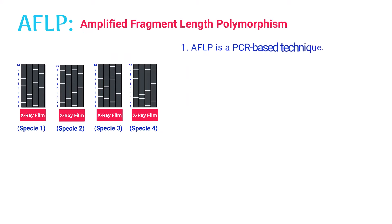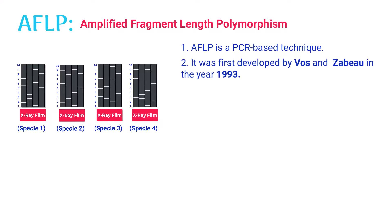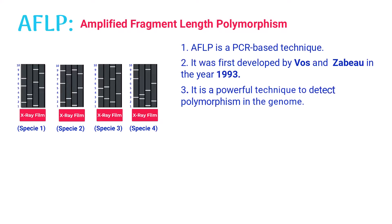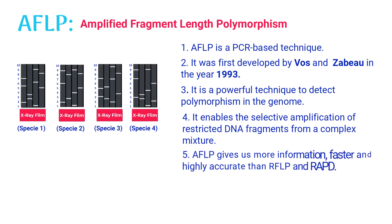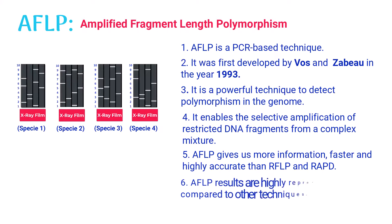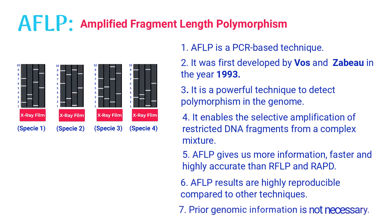AFLP is a PCR-based technique, first developed by Walsh and Zebo in the year 1993. It is a powerful technique to detect polymorphism in the genome, enabling the selective amplification of restricted DNA fragments from a complex mixture. AFLP gives more information, faster and highly accurate than RFLP and RAPD, and its results are highly reproducible. Prior genomic information is not necessary in AFLP.